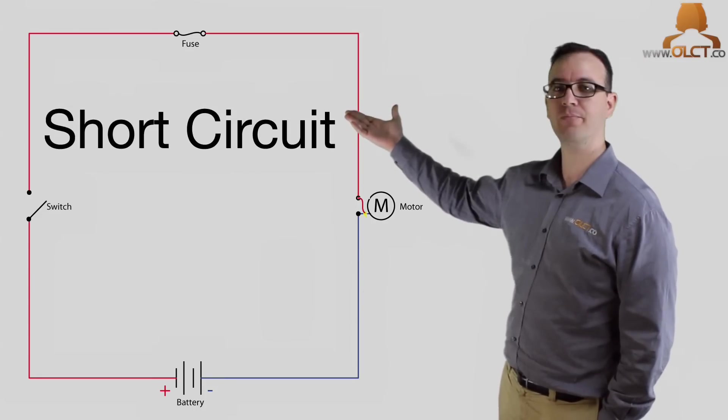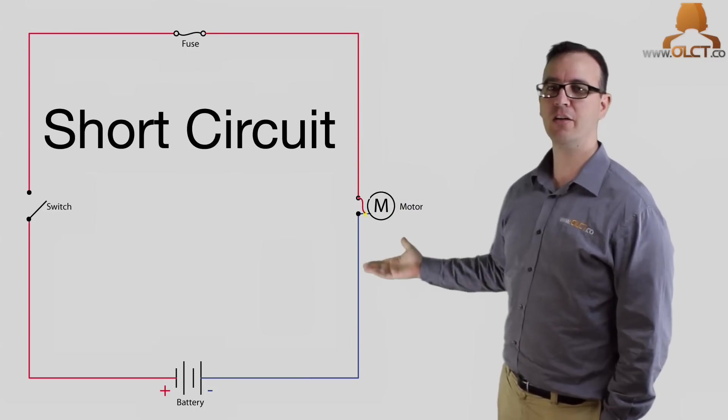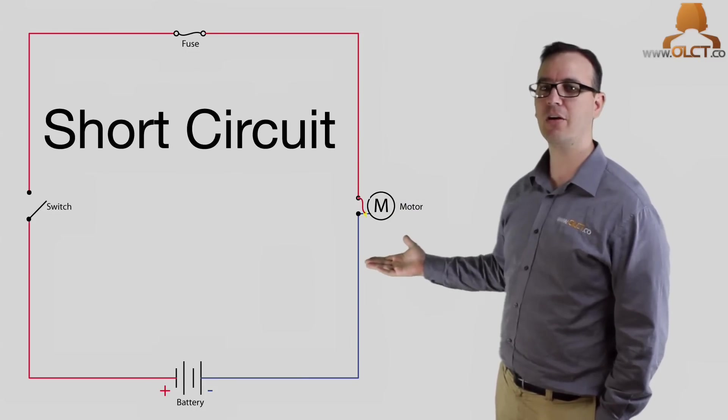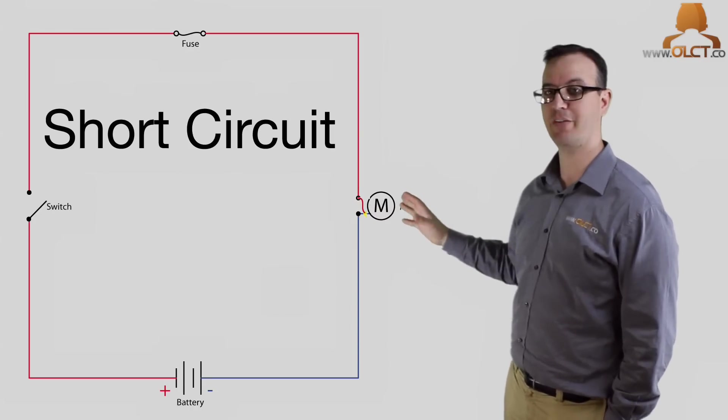A short circuit. That's something wire touching something steel, dropping the resistance of the circuit so low that the current flow goes through the roof and blows the fuse. Hopefully.